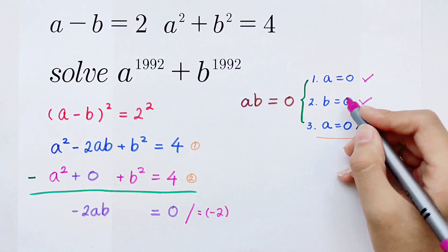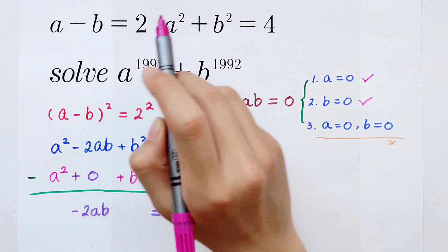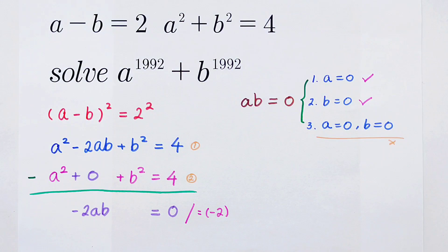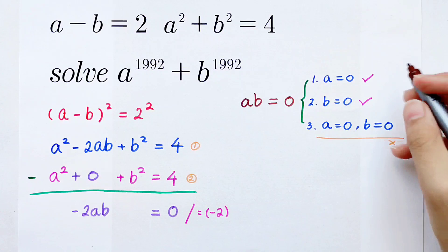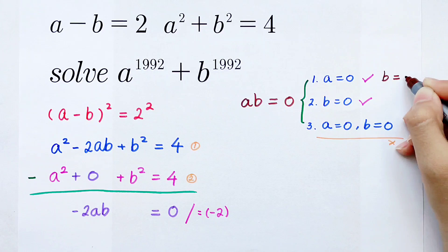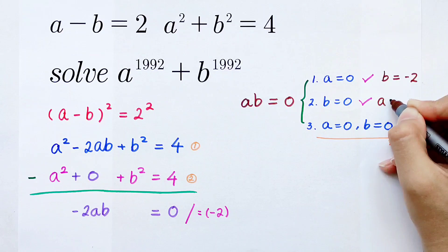If b is 0, then a is 2. And a² plus b² is also 4, it's right. So the first case, b is minus 2. The second one, b is 0 and a is 2.